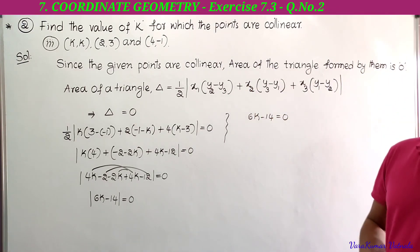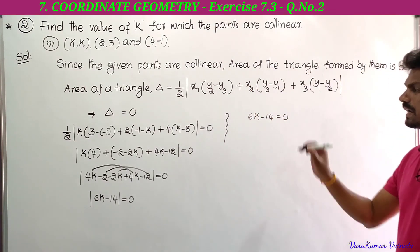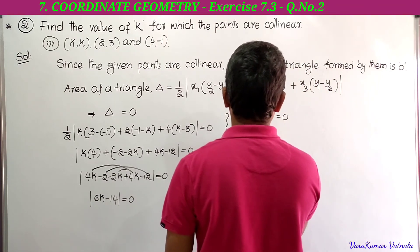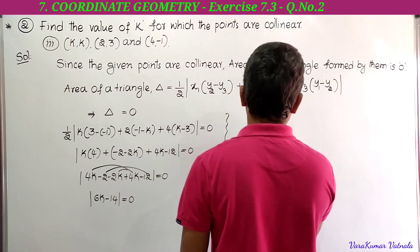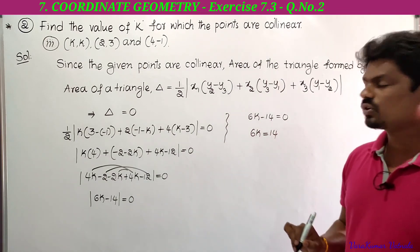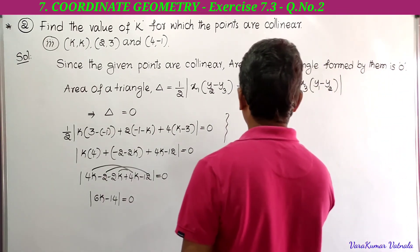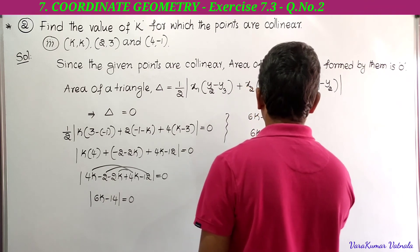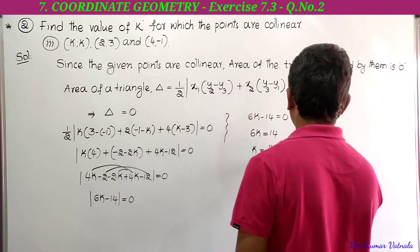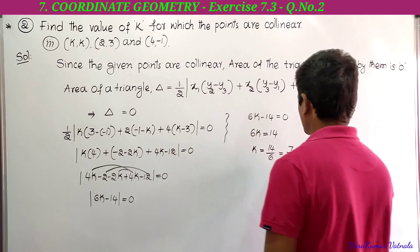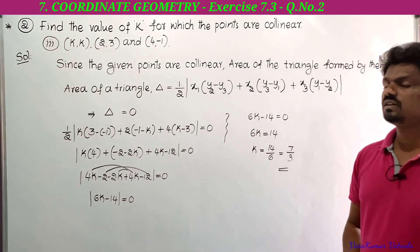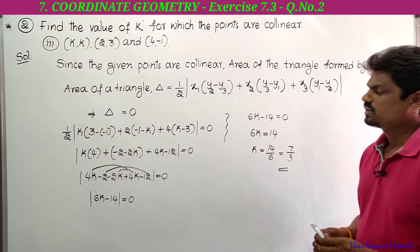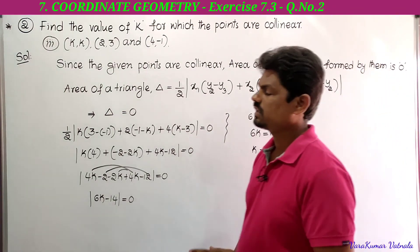6k - 14 = 0. Taking -14 to the right side, we get 6k = 14. Taking 6 to the right side, k = 14/6. Cancelling by 2, we get k = 7/3. So k is equal to 7/3. This is the third bit in the second problem.